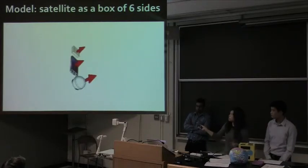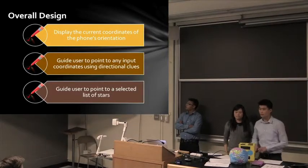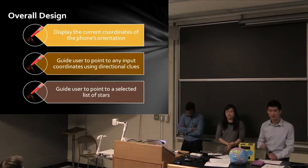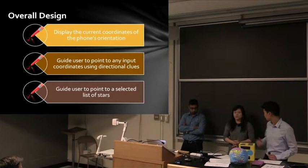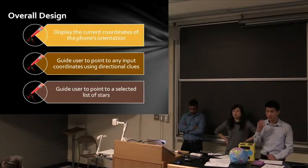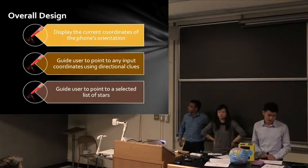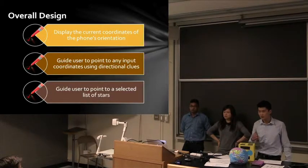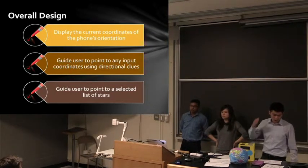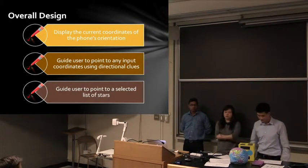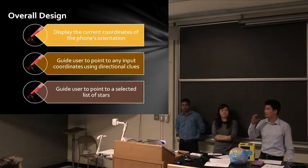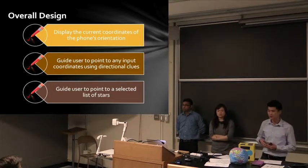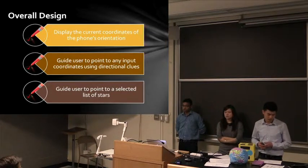I'll talk about the overall app design. The first functionality is that the app needs to understand where it is pointing in space. As mentioned, satellite operators use a specific coordinate system. In the demo, you will see the phone reporting in real time the coordinates of where it is currently pointing, and the satellite operator can simply read the coordinates from there.